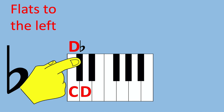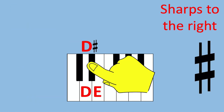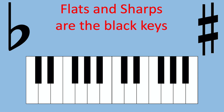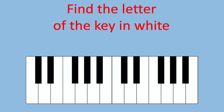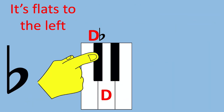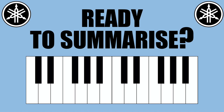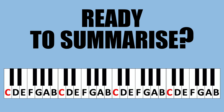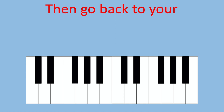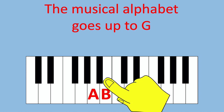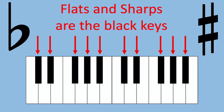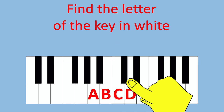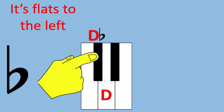sharps to the right. Flats and sharps are the black keys. Their symbols always look like these. Find the letter of the key in white. It's flats to the left and sharps to the right. We'll be right back.